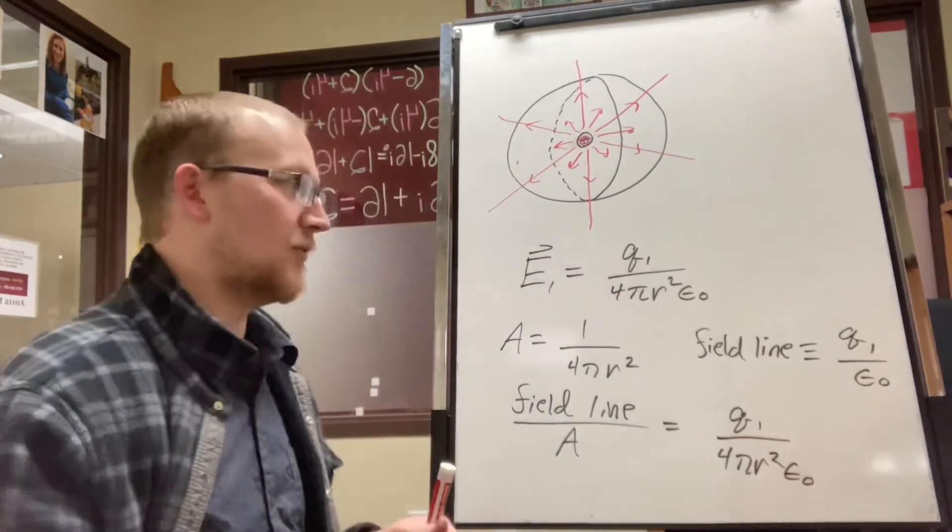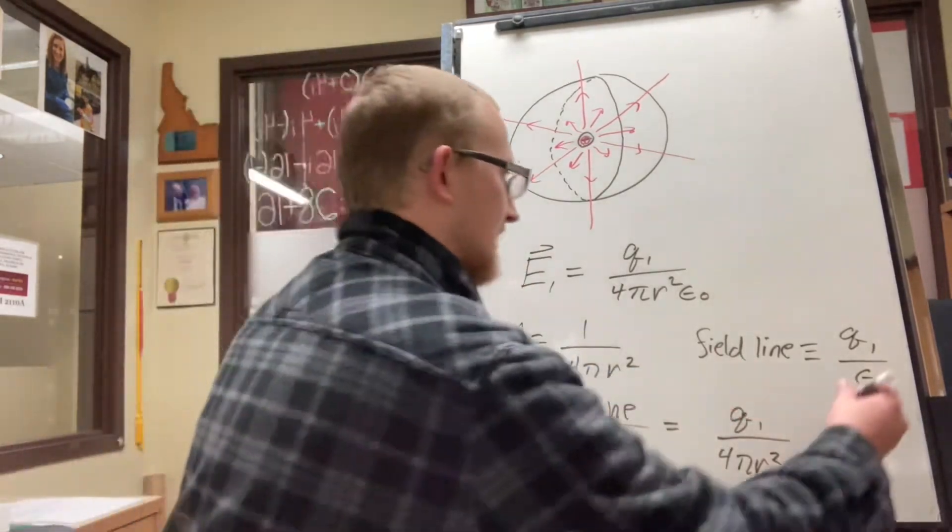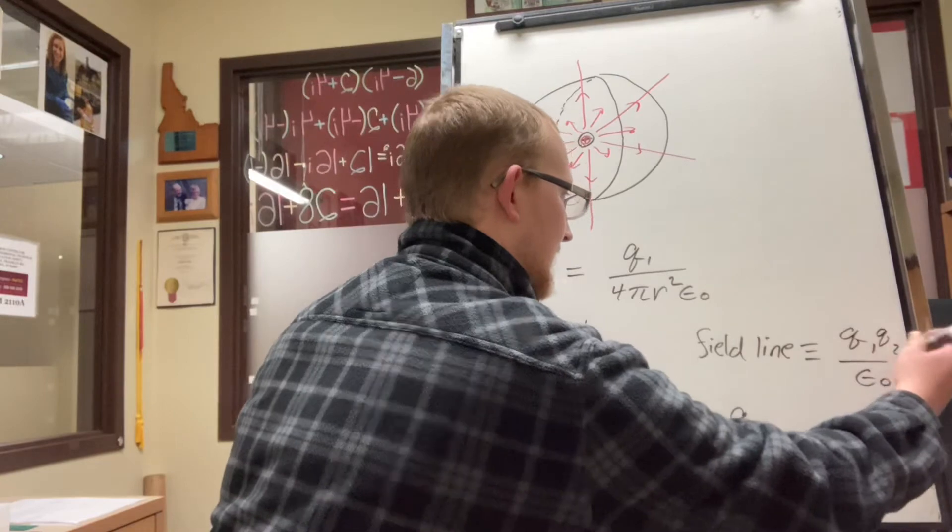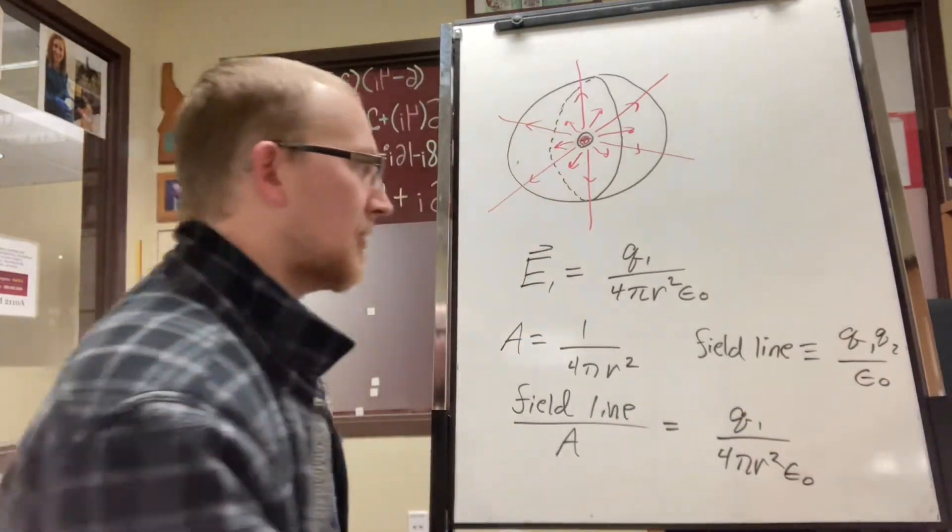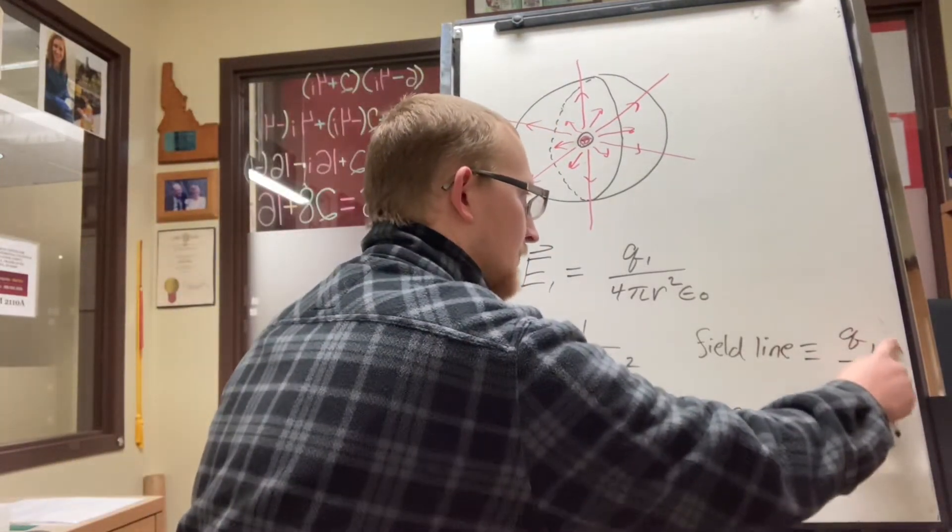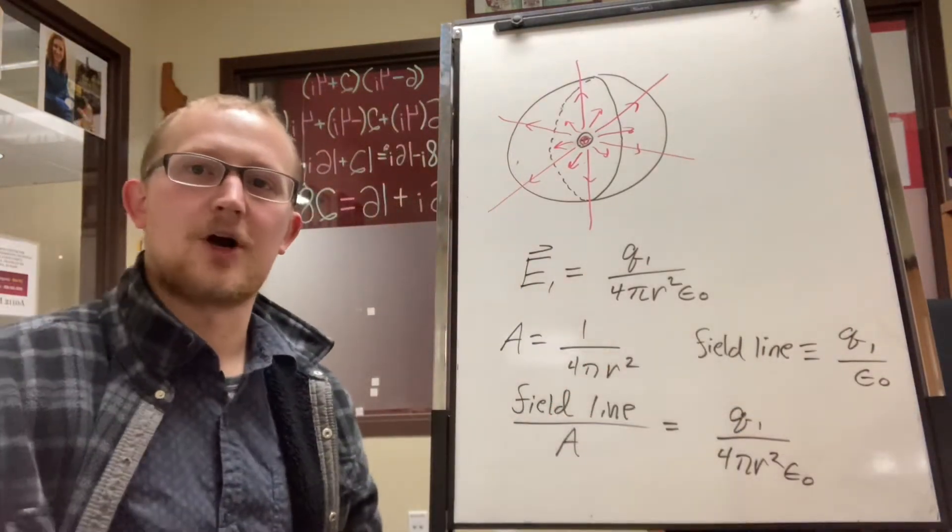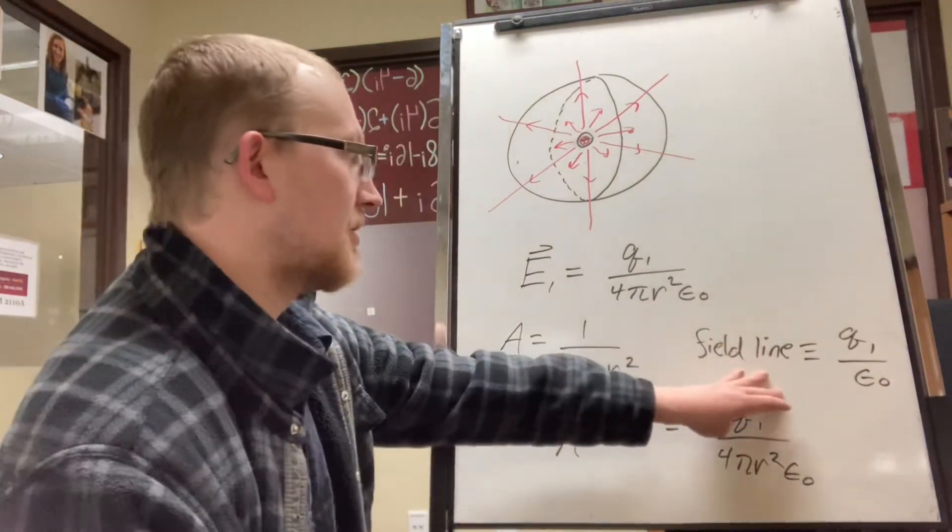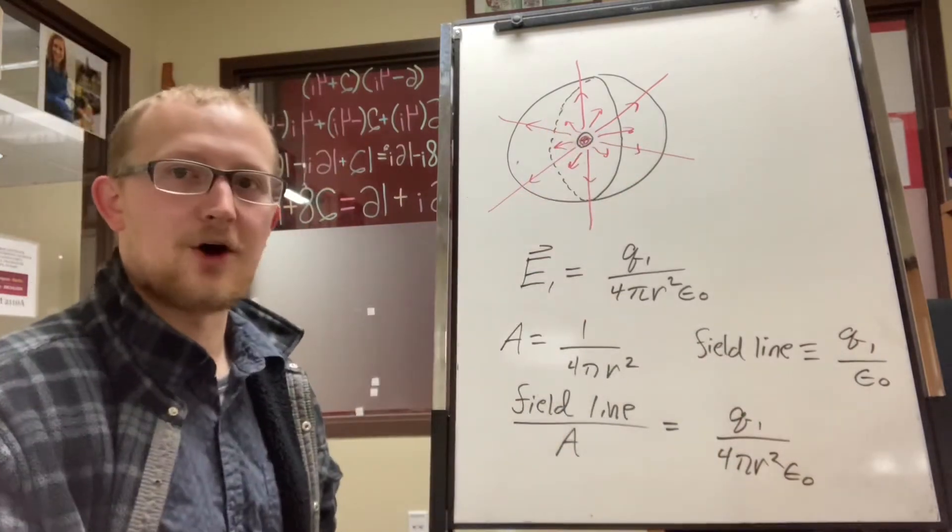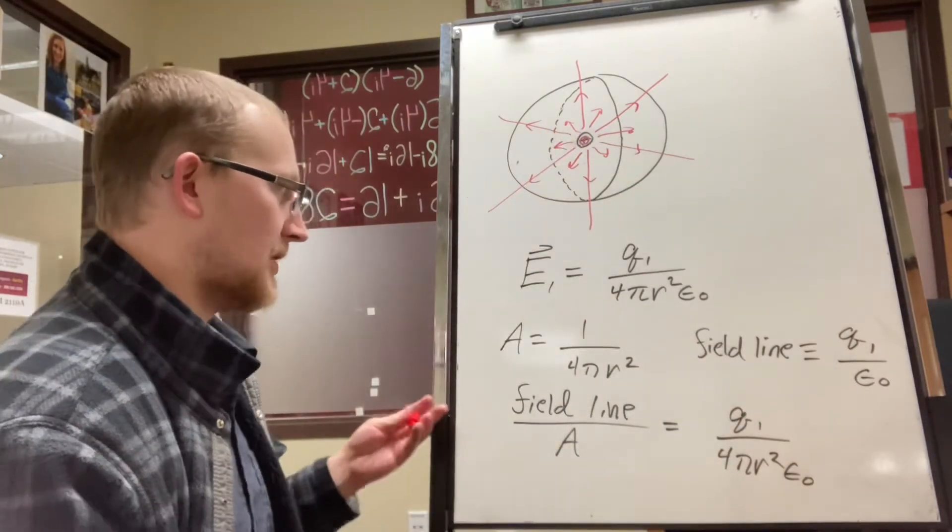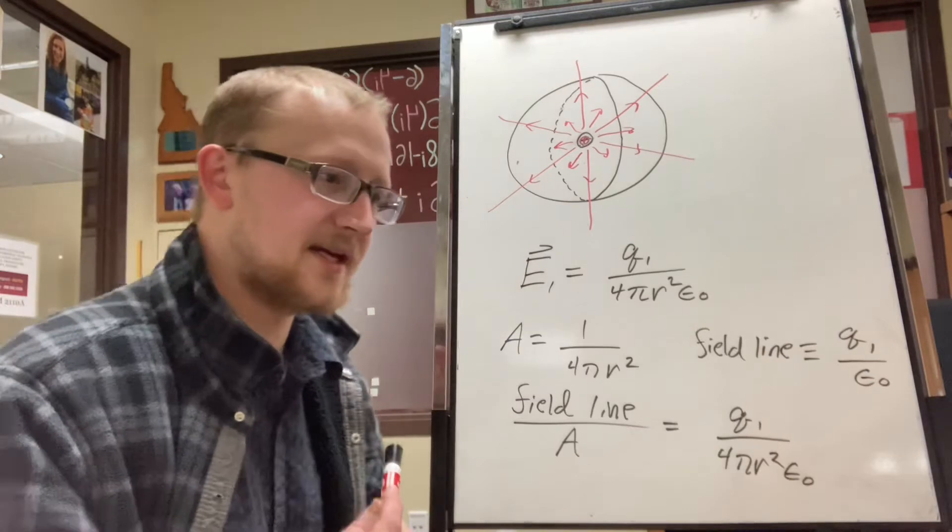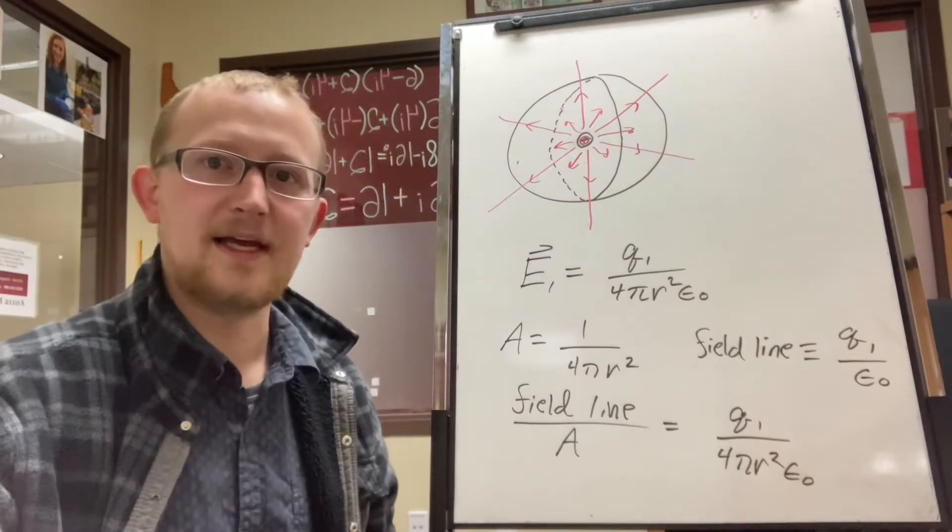So before when I talked about the amount of field lines and talked about the force, I had a q2 up here as well. But this is in fact regardless of whether there's a second charge or not. This applies to a singular charge, or a multitude of charges, but I just thought it was a little bit misleading. Hopefully it made sense.